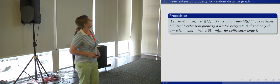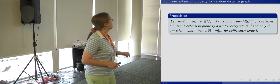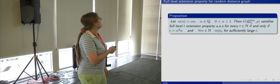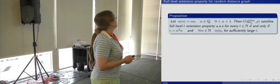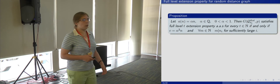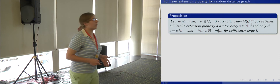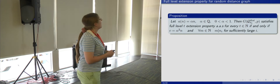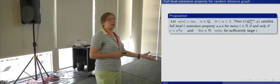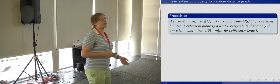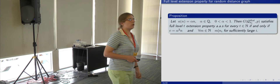So this is a necessary and sufficient condition for the random distance graph to satisfy the full level extension property for any level T. This proposition implies the theorem about the 0,1 law. Indeed, we can choose a subsequence N_I such that for any natural number M, N_I is divisible by M for sufficiently large I. For such a subsequence, G(G_{N_I}, P) satisfies the full level extension property and therefore the 0,1 law holds. But if we consider the whole sequence G(G_N, P), there are subsequences where N_I is not divisible by M, and therefore there are subsequences which do not satisfy the full level extension property, which says that the 0,1 law does not hold.